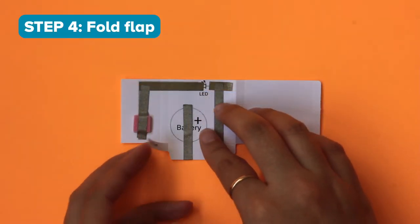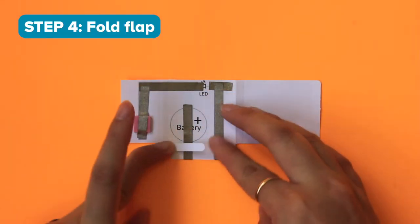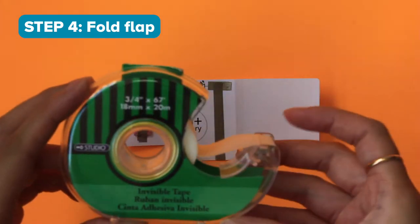Step 4. Fold over the flap. Get some regular scotch tape and tape it over like so.